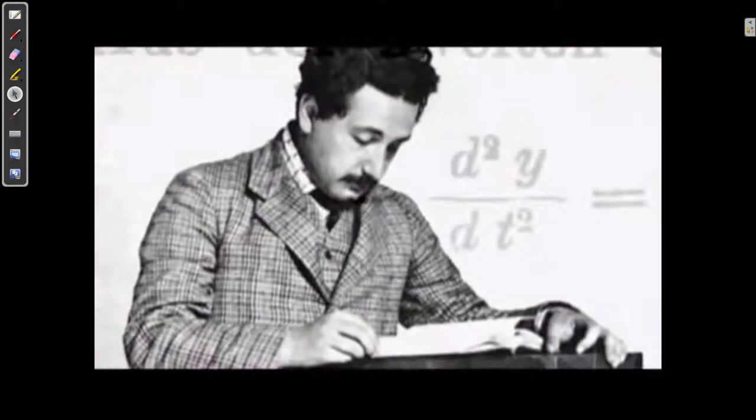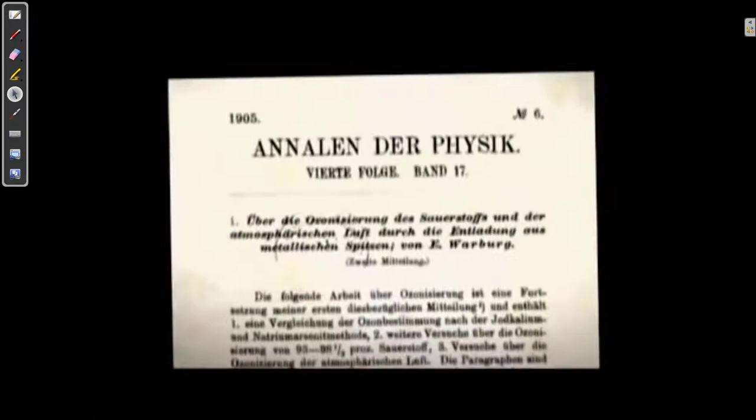Einstein realized that his theory failed for accelerations. But in our universe, everything accelerates. Einstein knows that for his theory to work, it has to account for everything in the universe. And the ambitious Einstein decides to advance an even more radical interpretation of the universe, a general theory of relativity.